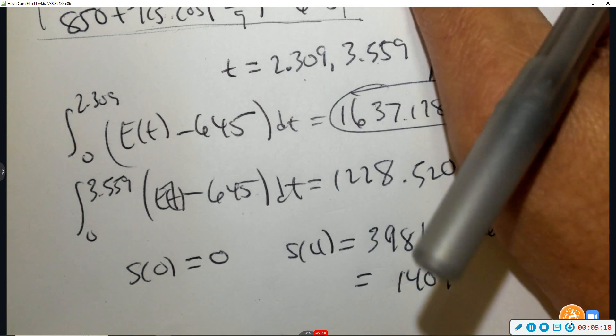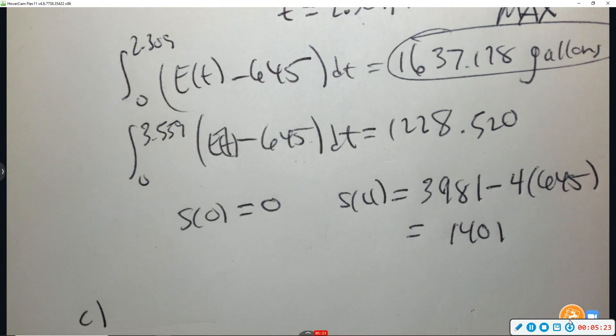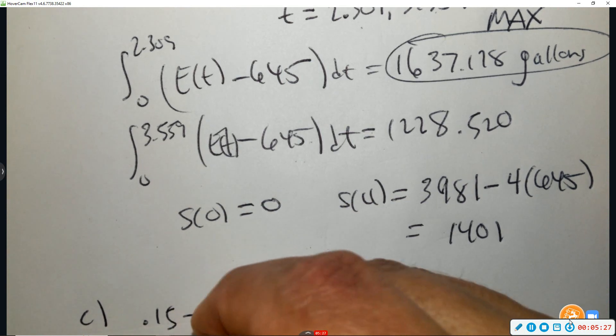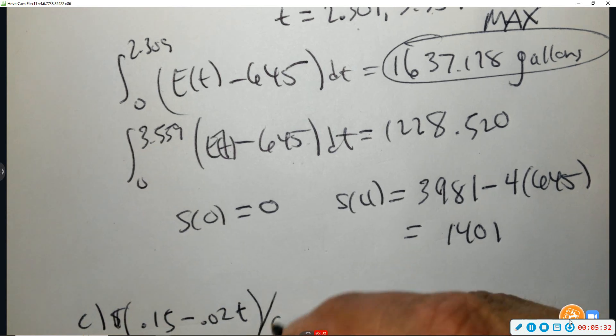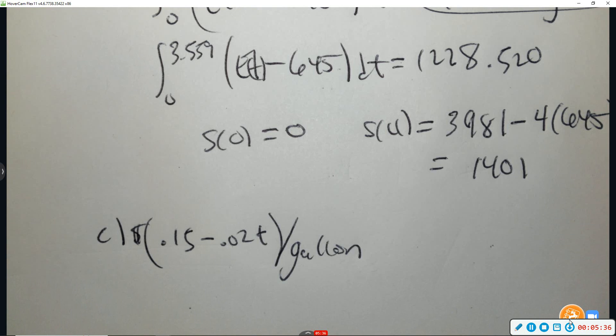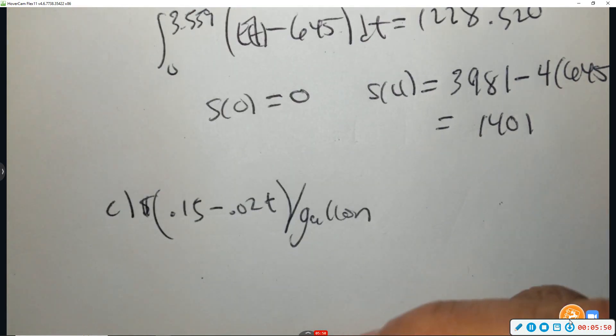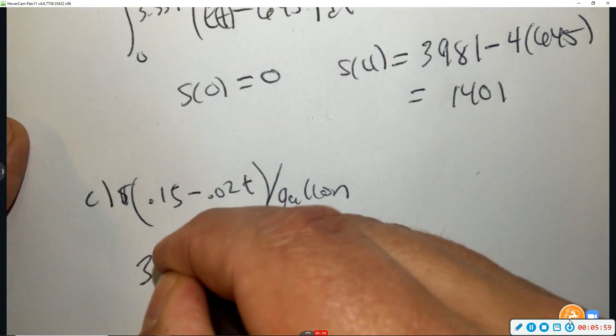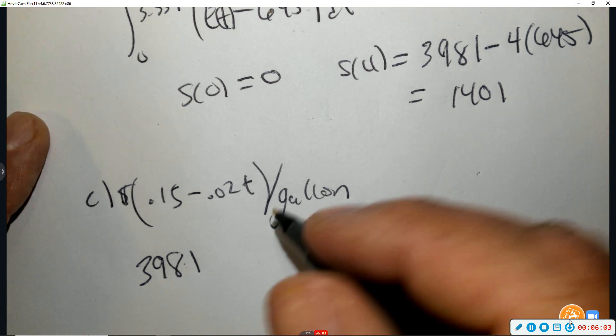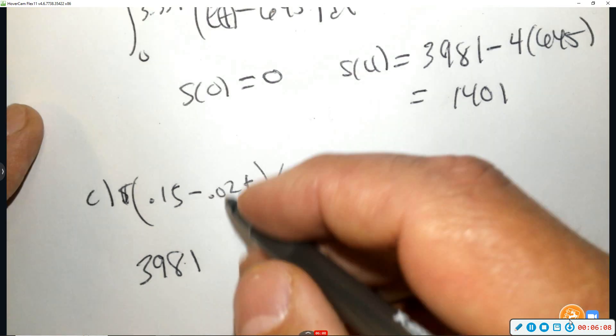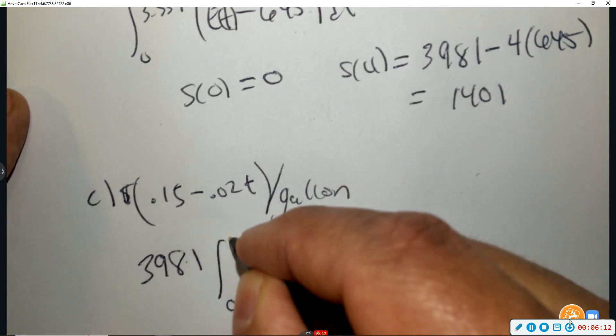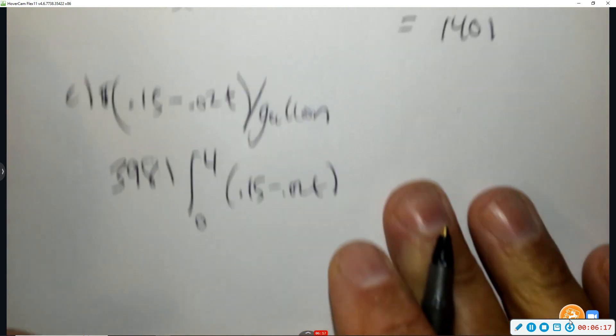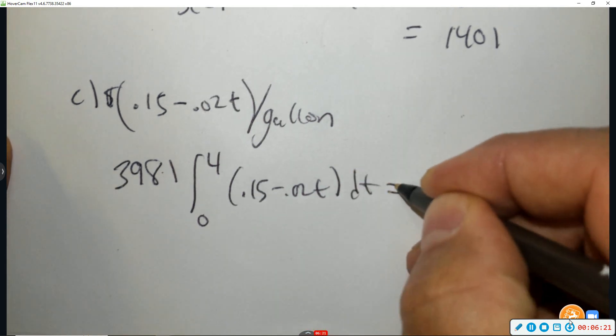Part C. From 0 to 4, the cost of treating the raw sewage that enters the tank at T is 0.15 minus 0.02T dollars per gallon. To the nearest dollar, what is the total cost of treating all the sewage that enters the tank during the time interval from 0 to 4? So the amount that's again entered from 0 to 4, we did that up here, 3,981. You just multiply it. And we need to integrate the rate of the cost. And then type this in, and you get the cost $474.